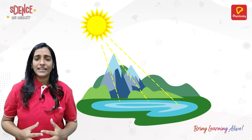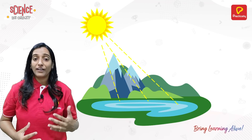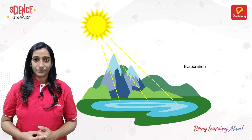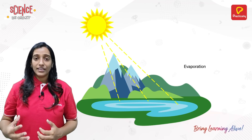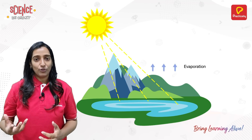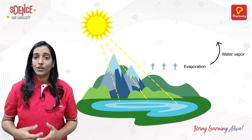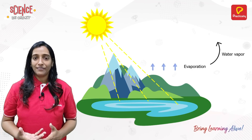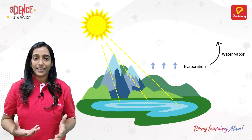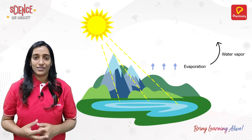Anything that contains water will start to evaporate when it comes in contact with sunlight. The evaporation process helps in the formation of water vapor. Water vapor is so light that air picks it up and takes it higher up in the sky.